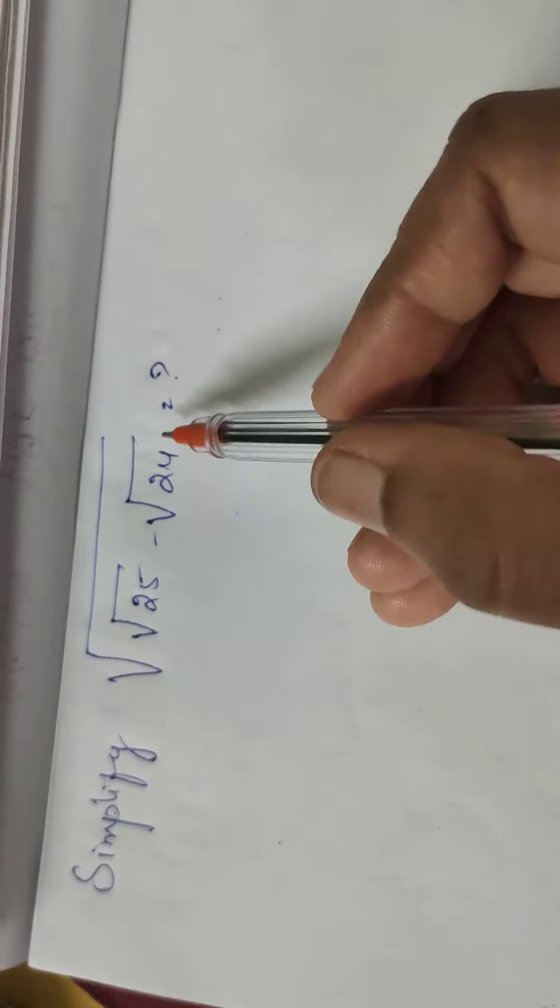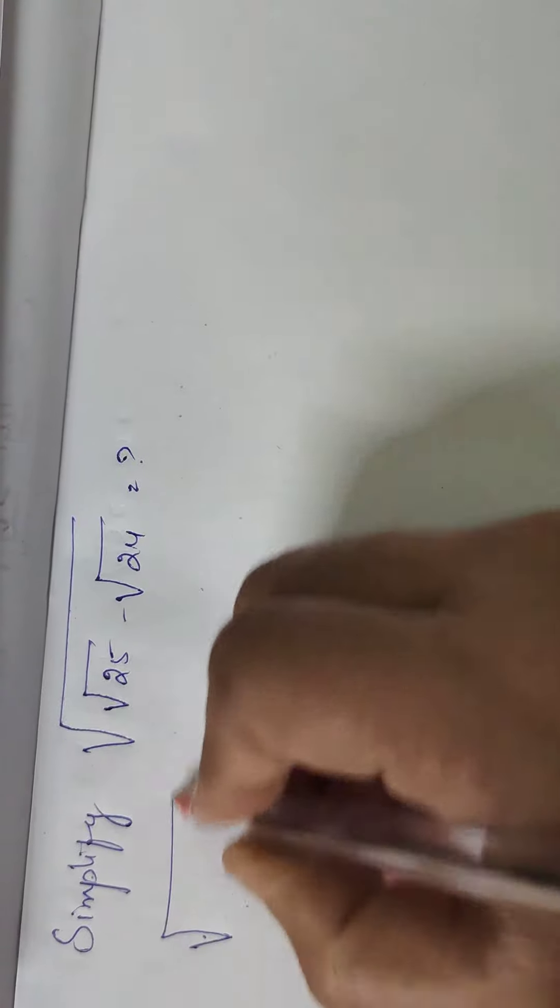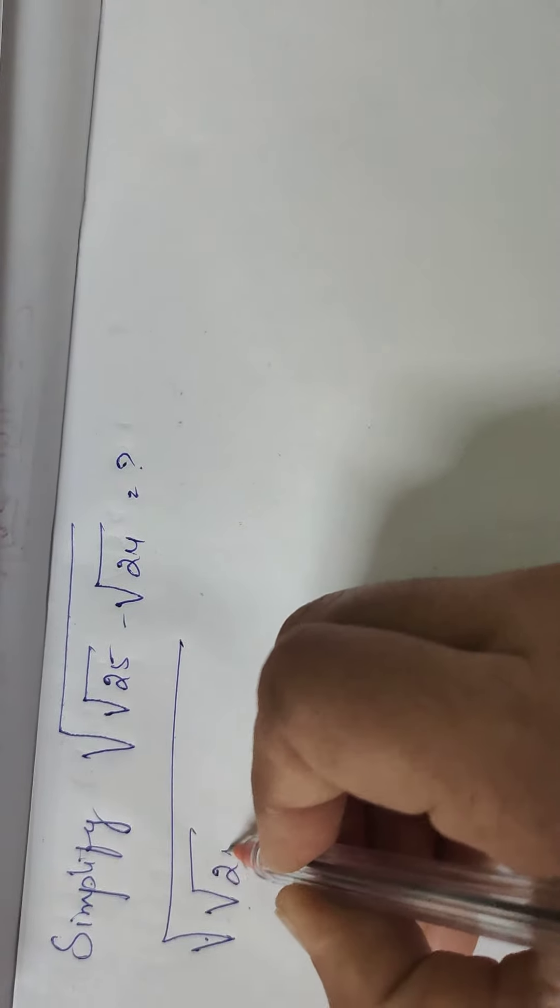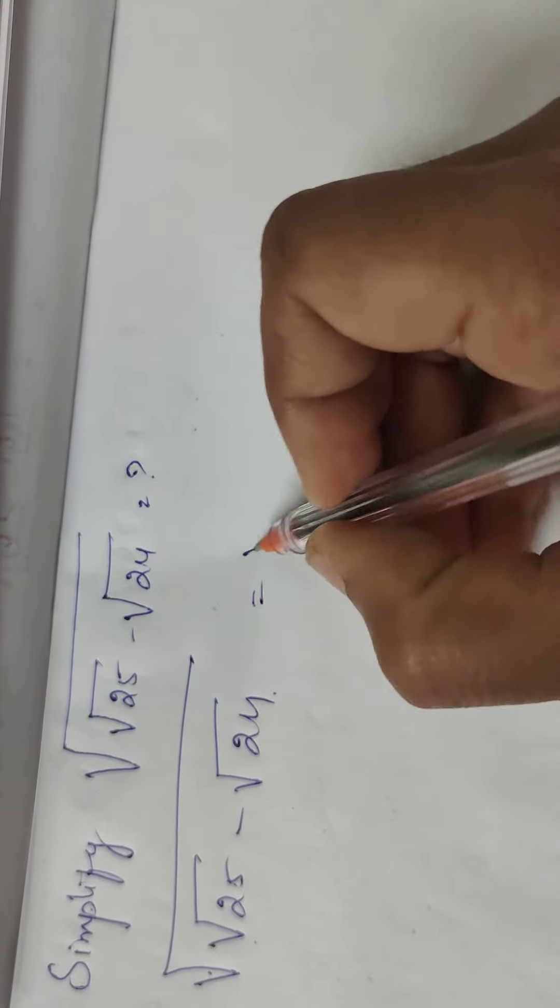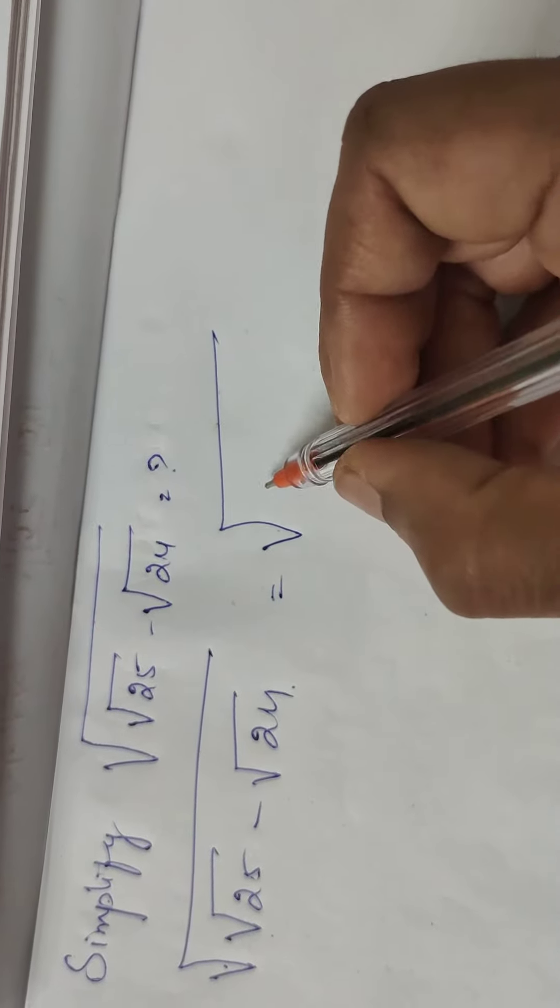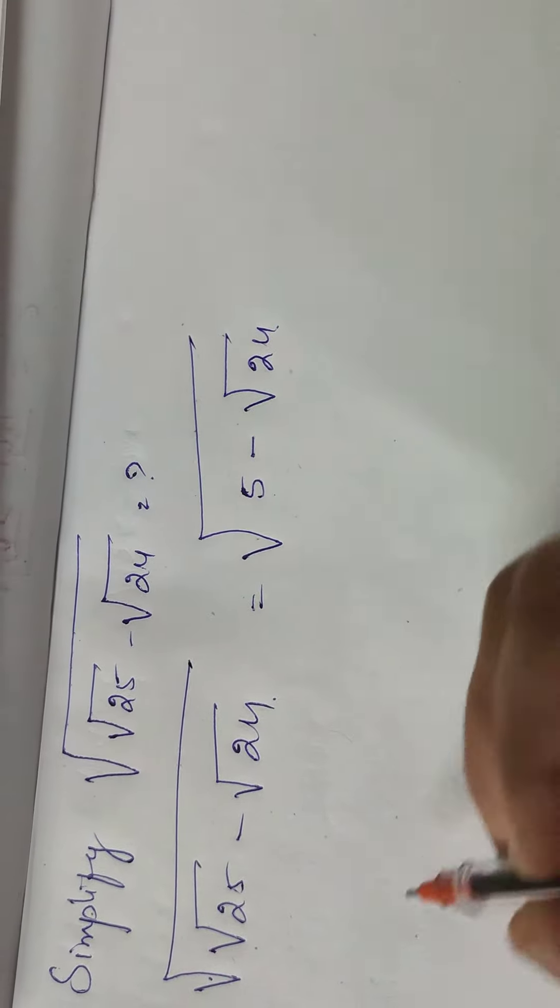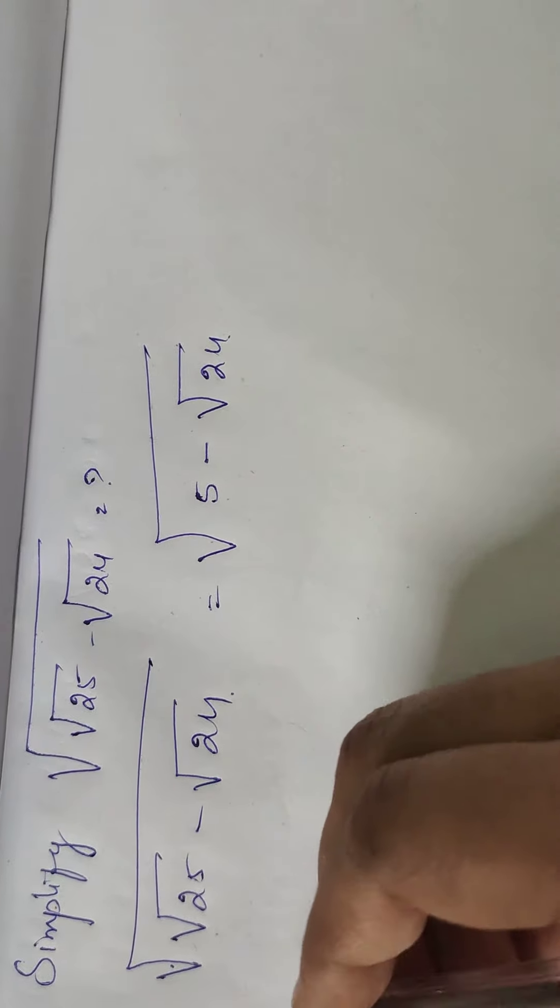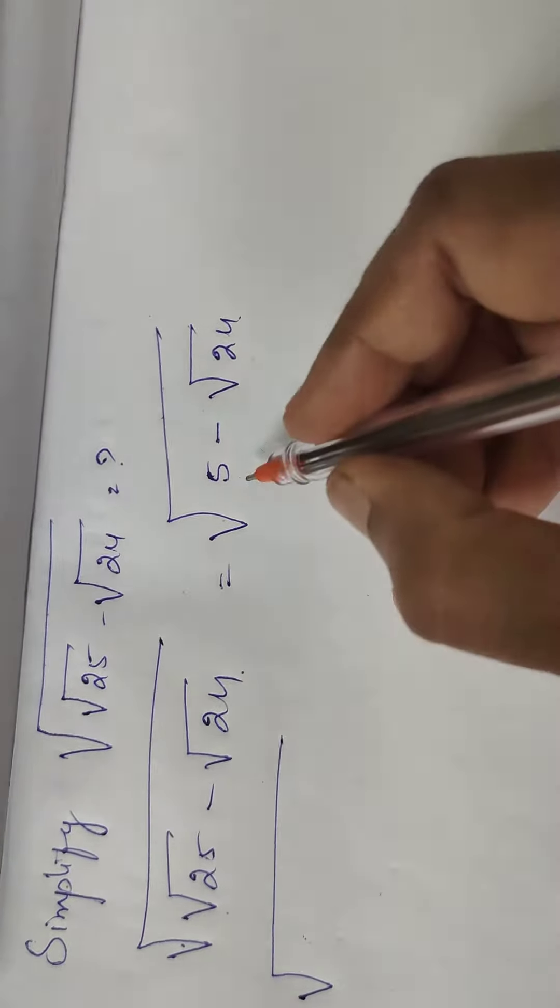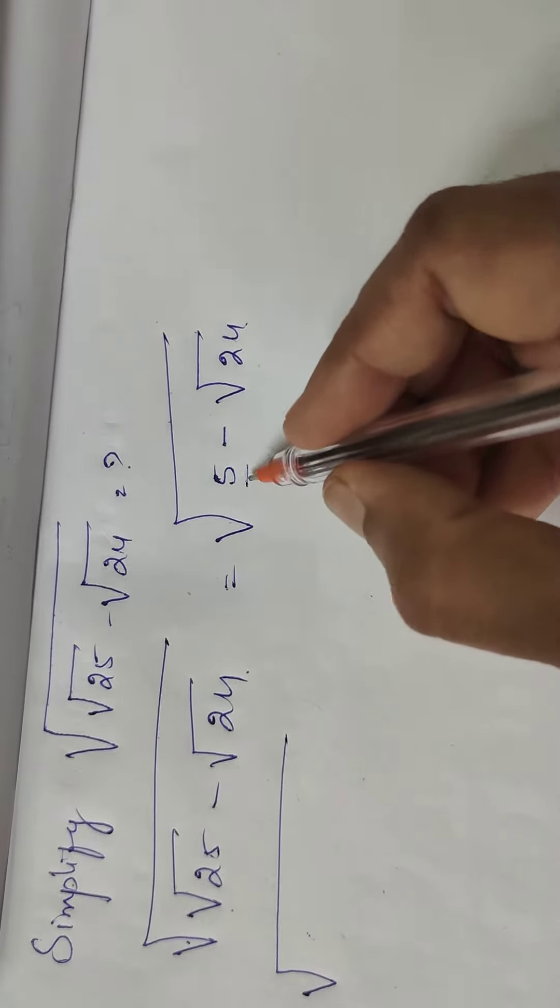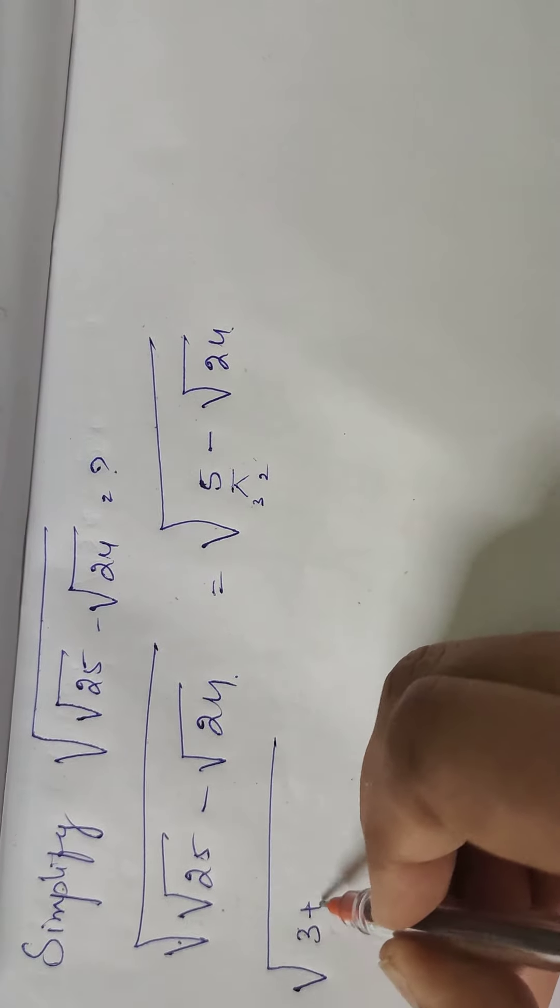So let's evaluate this square root: square root of 25 minus square root of 24. How can we write it? We know the square root of 25 is 5 minus square root of 24. Now in the next step, we will write this 5 in the form of 3 plus 2.